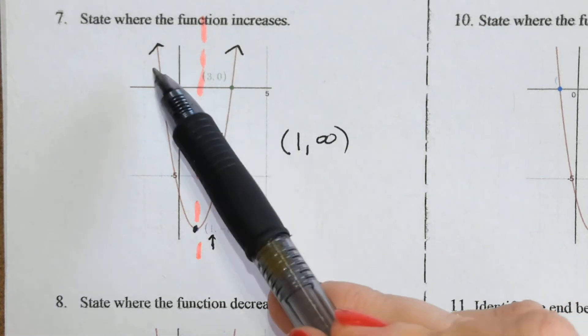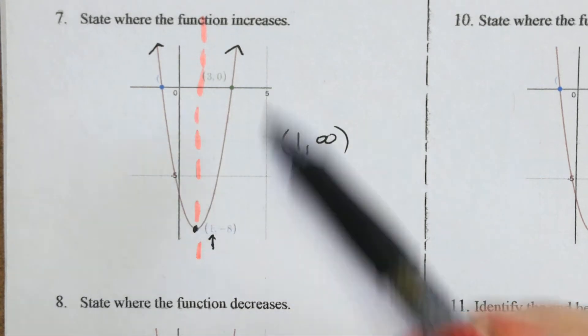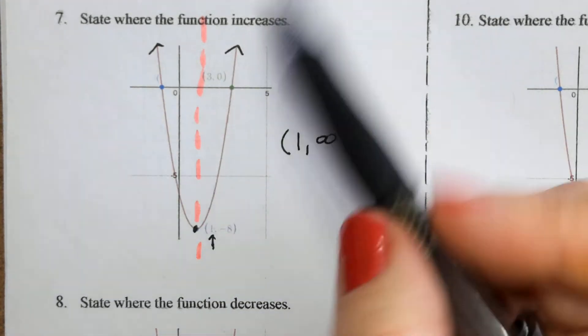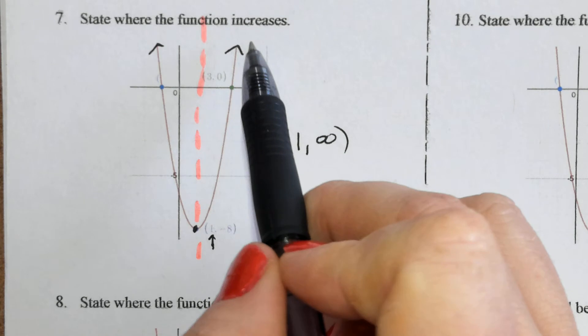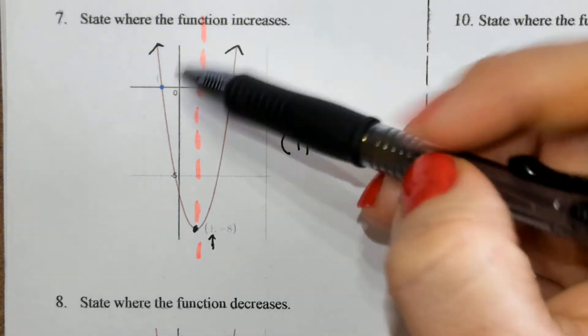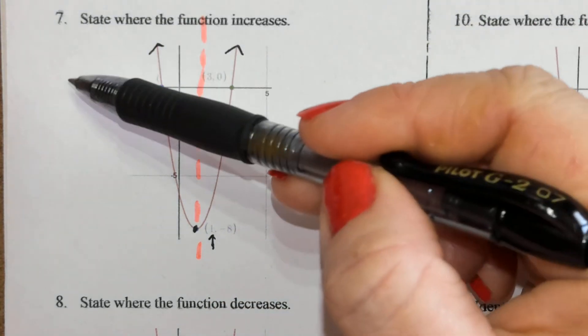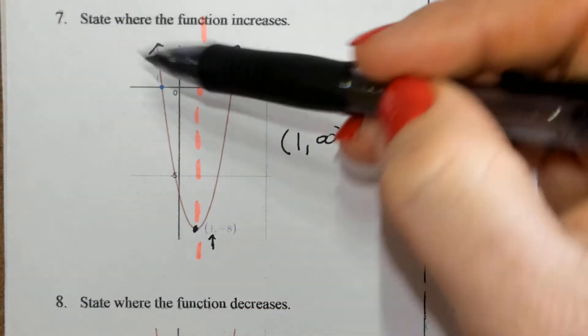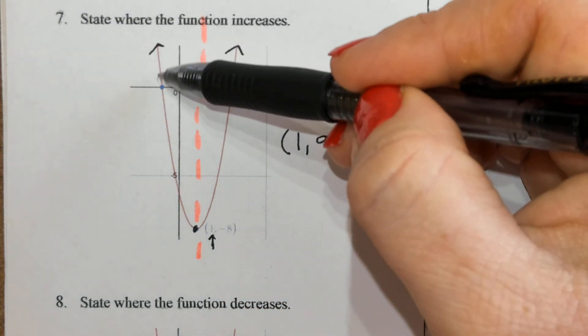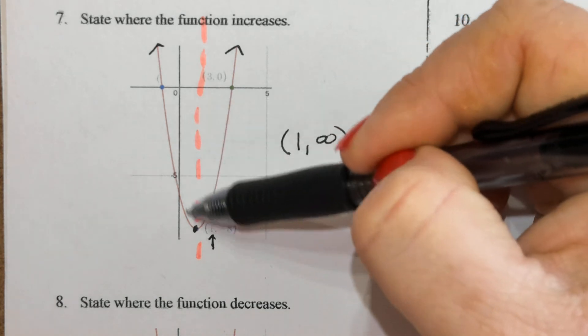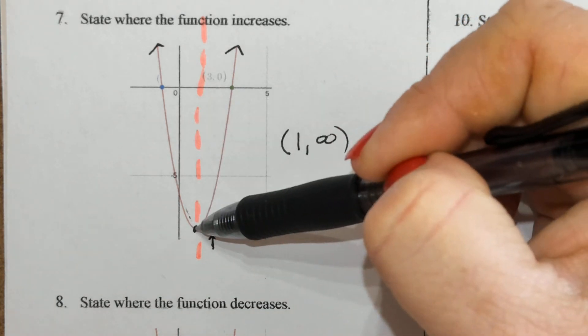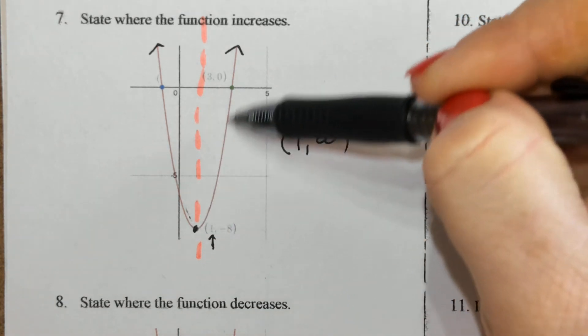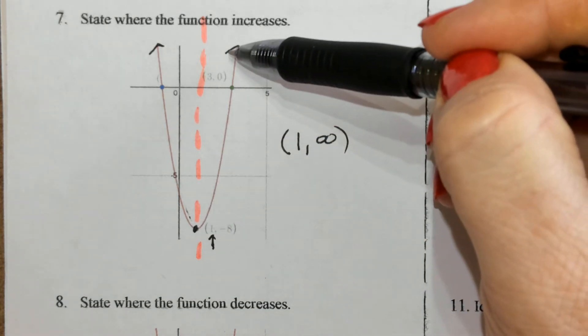State where the function increases. We have three different parts to this function when we describe increasing or decreasing. We always read it from left to right. Here it is decreasing, then neutral, and then increasing.